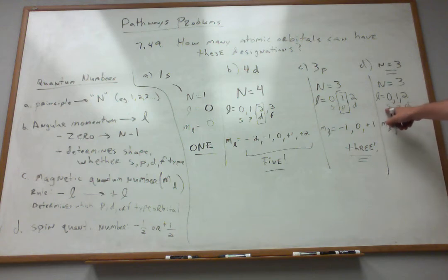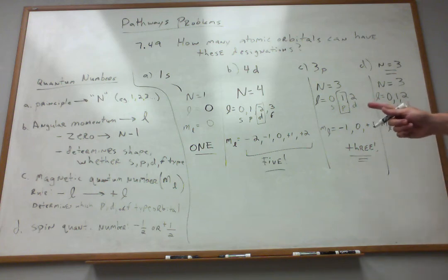So if l was s, the only possibility would be m sub l being 0. That would be my s-type orbital. There's only one of them.